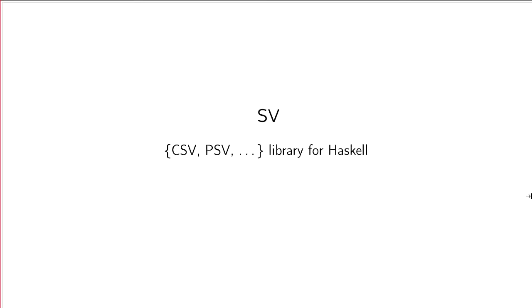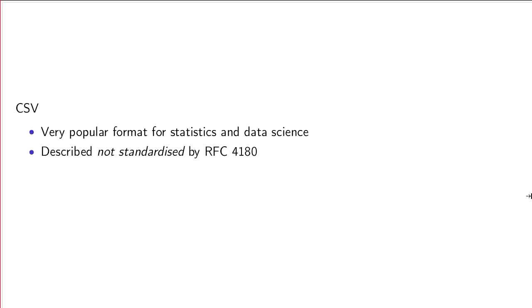The next thing I want to talk about is SV — a library for Haskell for dealing with CSVs (comma separated values), pipe separated values, or whatever separator you like. It's very flexible: there's a test in the test suite showing that if you use the ASCII backspace character as your separator, the library will still work. CSVs are a very popular format for statistics and data science.